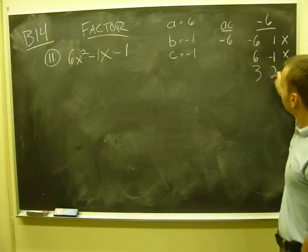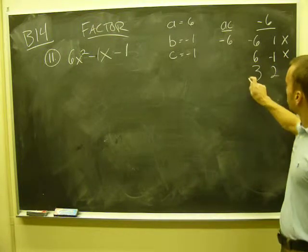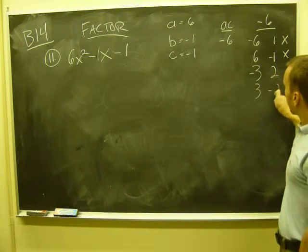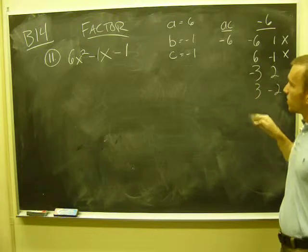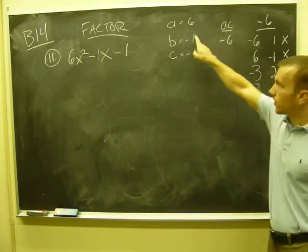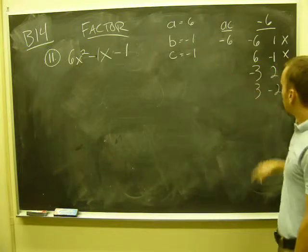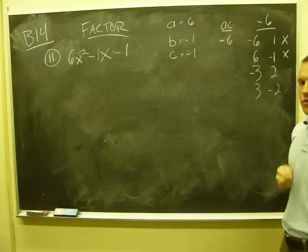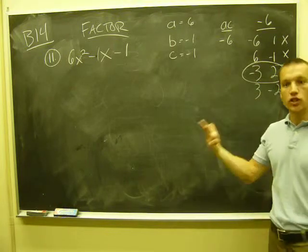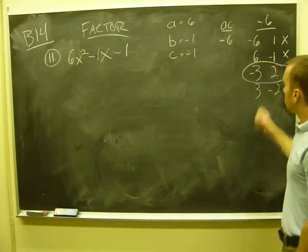Well, what about 3 and 2, right? It could be negative 3 and 2. It could be 3 and negative 2. But when I add them together, I want them to be negative 1. Right, multiply together to give you AC, add together to give you b. Remember, 3 and then negative 2 is positive 1. So that's no good. It's going to be those two numbers, right? Negative 3, 2, negative 1.